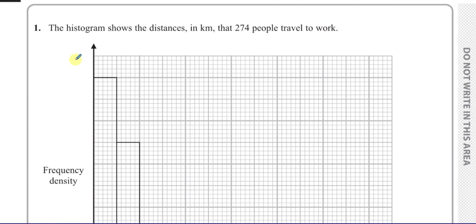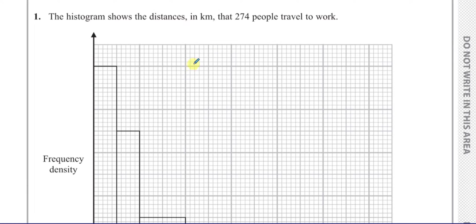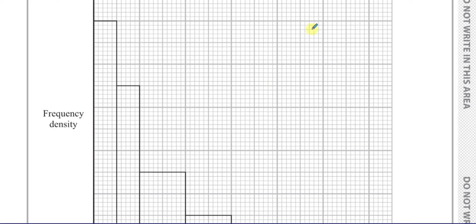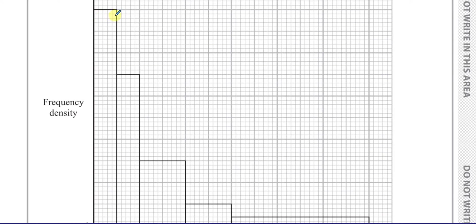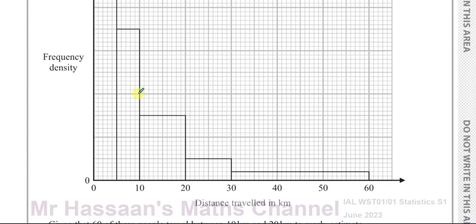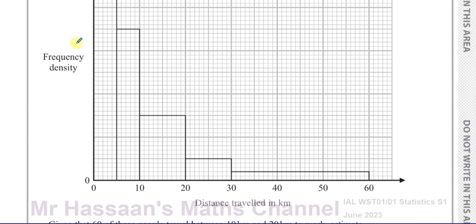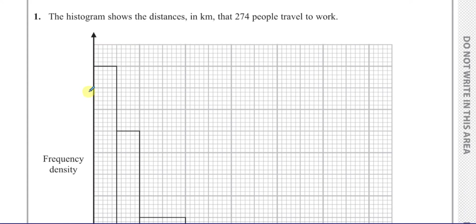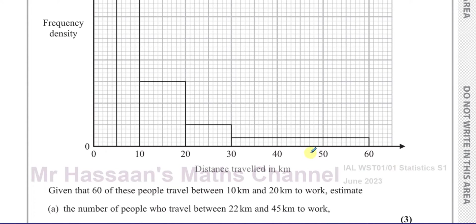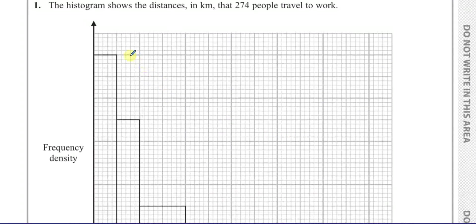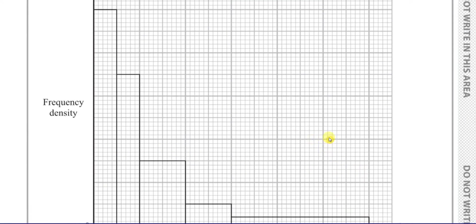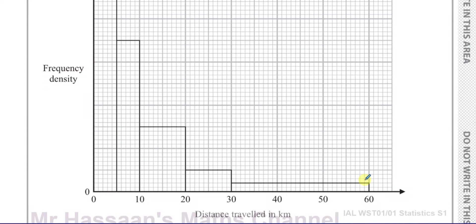Here we have a histogram which shows the distances in kilometers that 274 people travel to work. This histogram contains the information altogether of 274 people and how long it takes them to travel to work. We can notice that we have a frequency density scale or axis without any numbers on it, and here we have the distances on the x-axis.